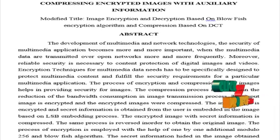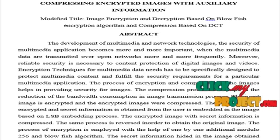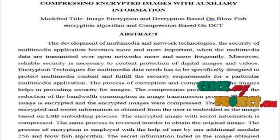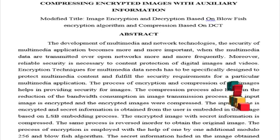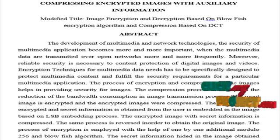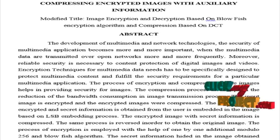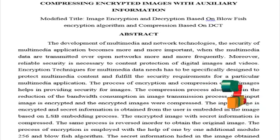The encryption process is employed with the help of an addition modulo 256 model and the Blowfish algorithm. The secret information hidden in the image is recovered on the receiver side by reversing the embedding process. The image is then decompressed by reversing the compression process, and the decompressed image is decrypted by reversing the Blowfish algorithm.